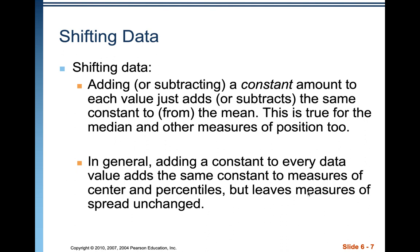When we subtract the mean from each of the observations, we're shifting the data — we're moving the mean to zero. Adding or subtracting a constant amount to each value just adds or subtracts the same constant to or from the mean. This is also true for the median and other measures of position.